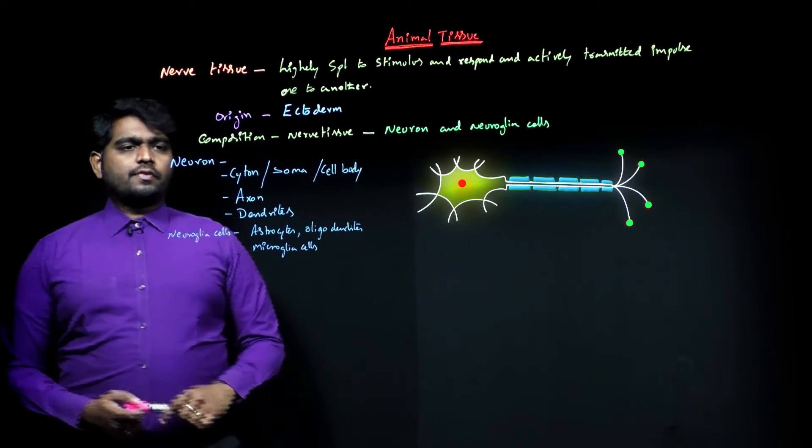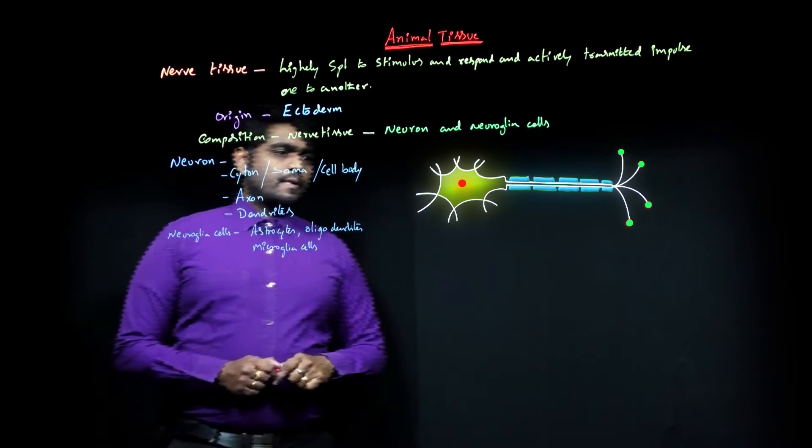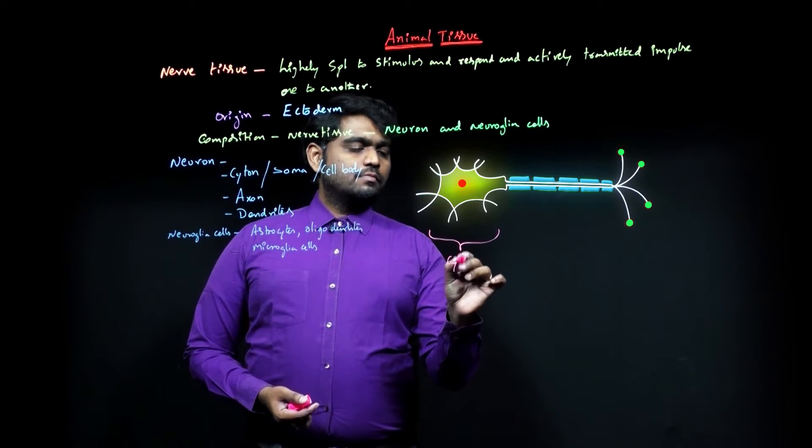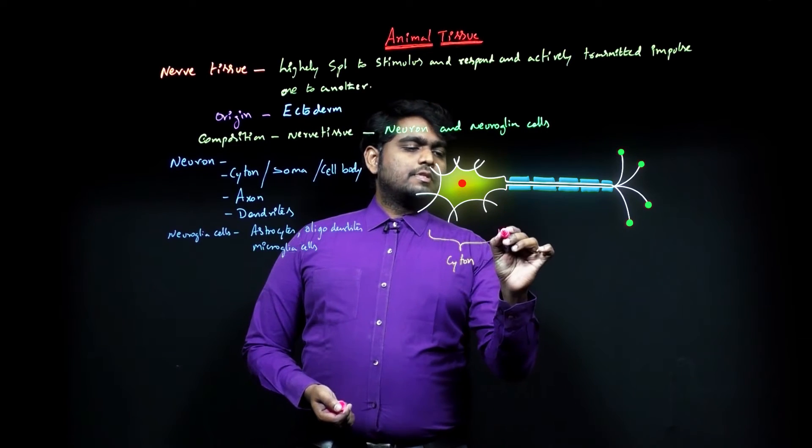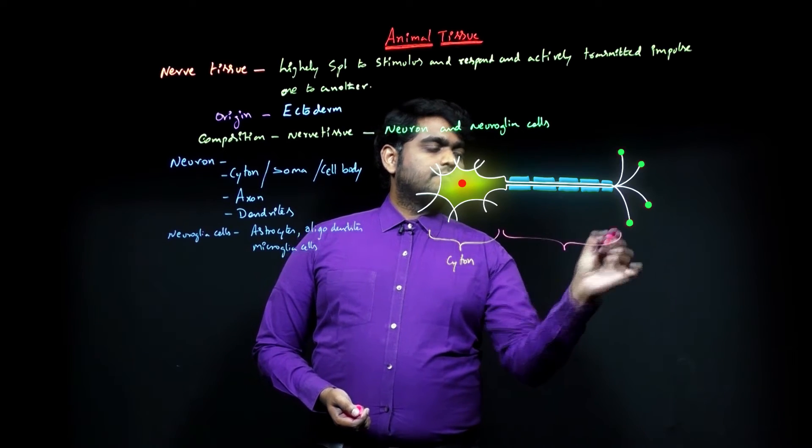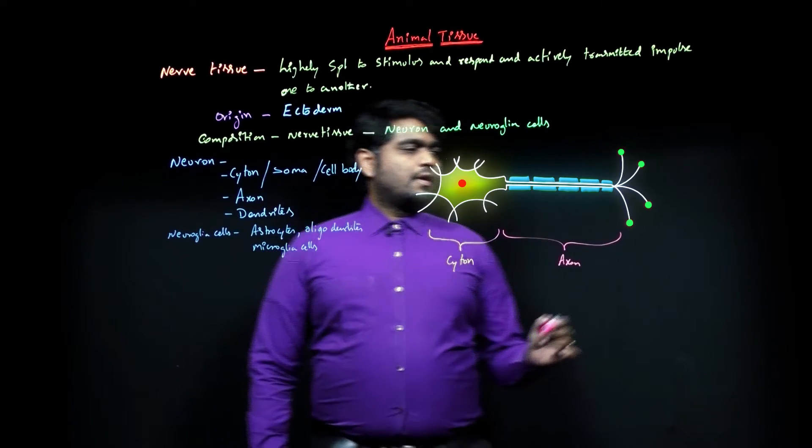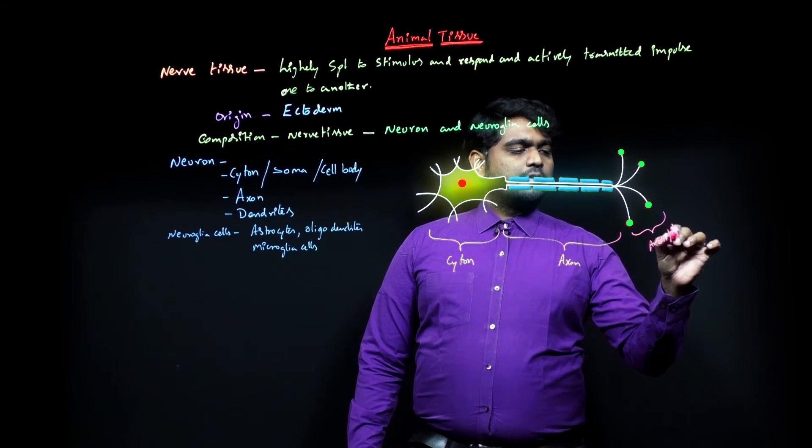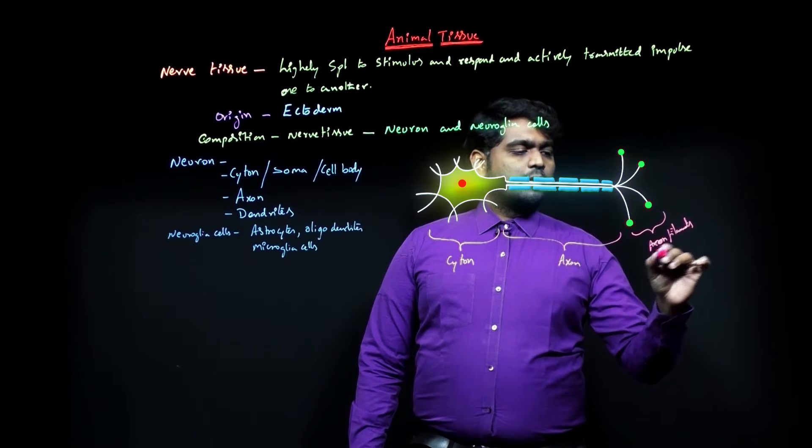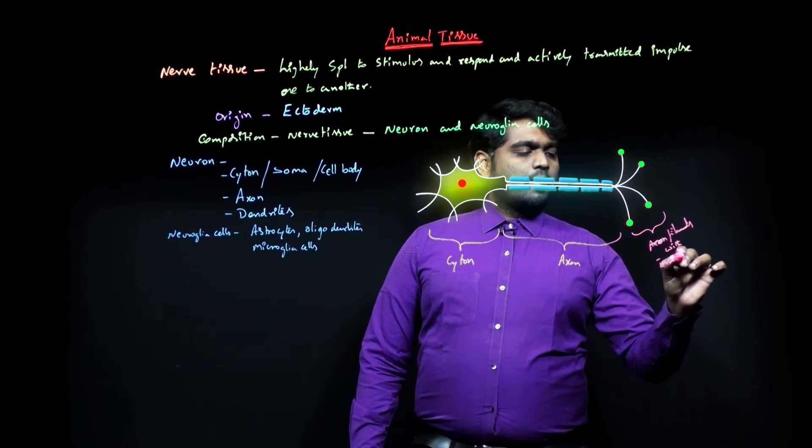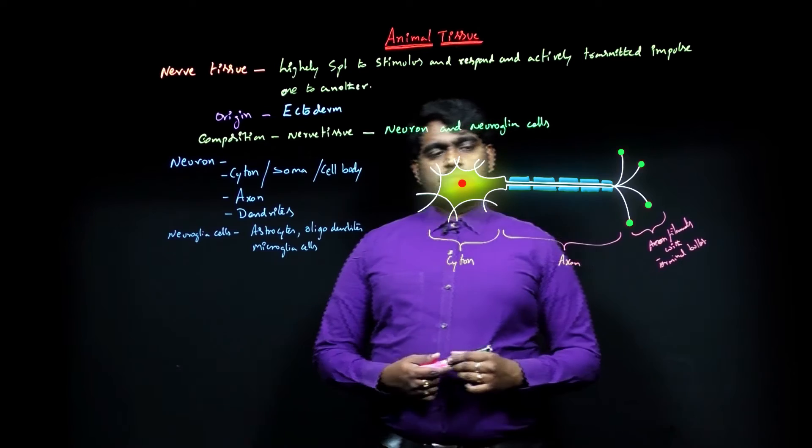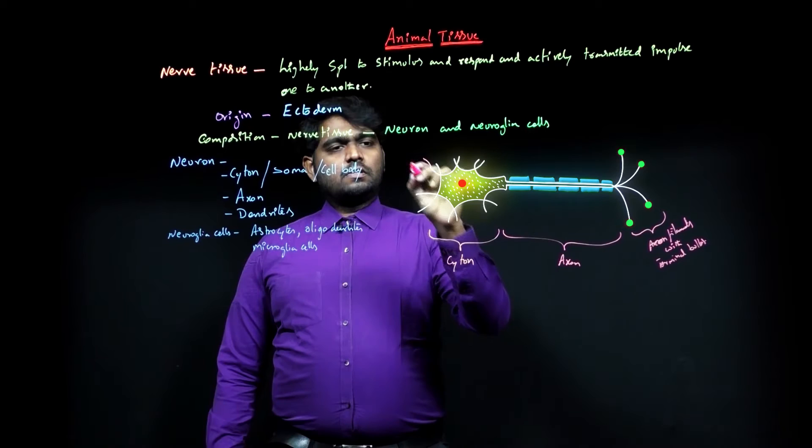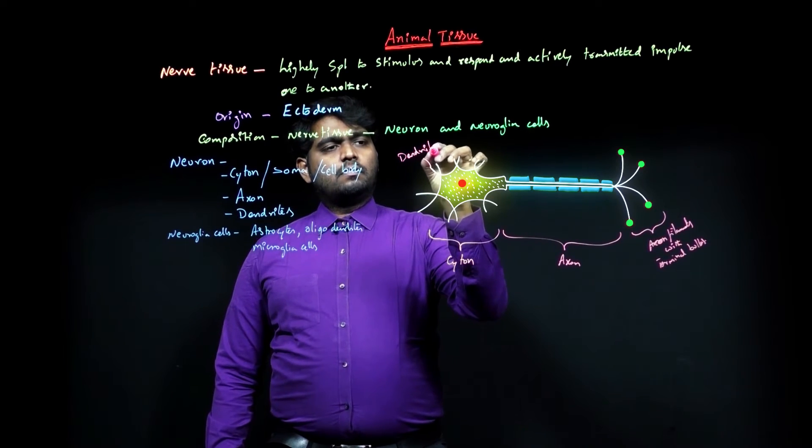First, I will explain the diagram, and after that neuron types will be discussed. This complete part is called cytone or soma. This complete part is called axon, and this one is axon filament—that means terminal bulbs. And this is dendrite.